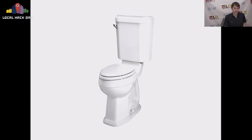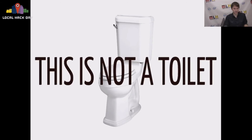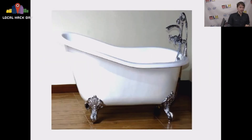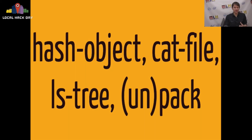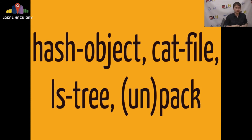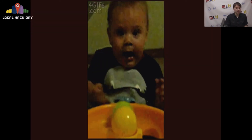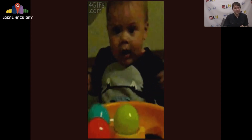The final thing to note is that Git is separated into two sets of commands. You have the porcelain — this is a metaphor, not a toilet — and then you have the plumbing commands. The porcelain commands are the things you're used to using: commit, branch, log, diff, add, etc. The plumbing commands are things you probably don't ever see: hash-object, cat-file, list-tree, and unpack and pack. These are the things that bind Git together. All of the commands you're used to using in Git — commit and things like that — all rely on these underlying plumbing commands. So if you ever truly wanted to understand Git, you should check out the plumbing commands.